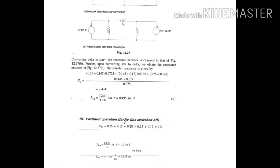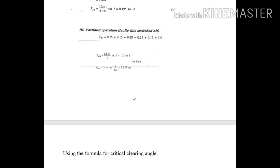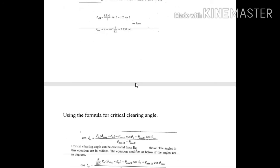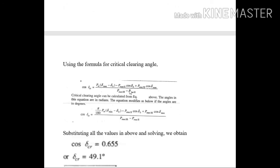So the expression for that is 1 per unit. Putting in the generalized expression PE3, we obtain this expression 1.2 sine delta. Then for finding delta max, the formula we are knowing is pi minus sine inverse PM by Pmax3. We obtain the value as 2.155 radian.